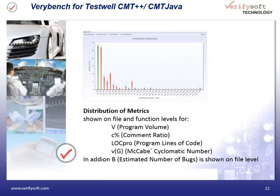The distribution of metrics gives information about the distribution of values across files and functions. This way you see how many files or functions are out of the limits and how far they are from the recommended values. This view is available for the program volume, the comments, the lines of code, the McCabe cyclomatic number, and the number of estimated bugs.